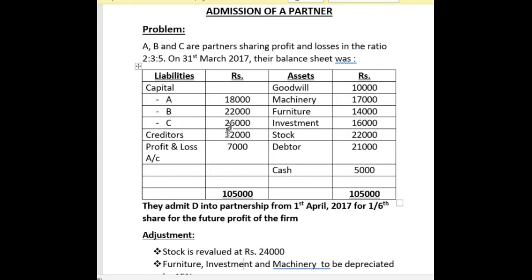Creditor balance is 32,000 and profit and loss account is given as 7,000. Now look at the asset side: goodwill is 10,000, machinery is 17,000, furniture 14,000, investment 16,000, stock value is 22,000, debtors is 21,000 and cash balance is 5,000. Total of balance sheet is 1,05,000.